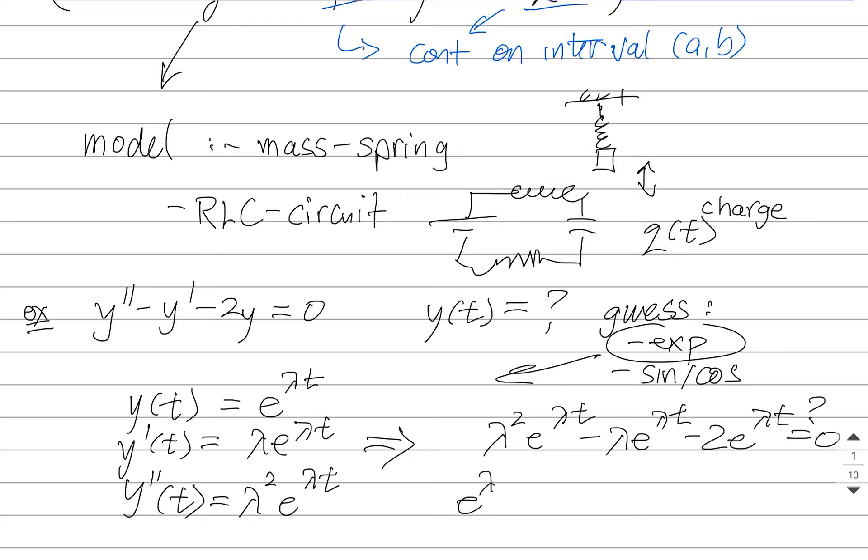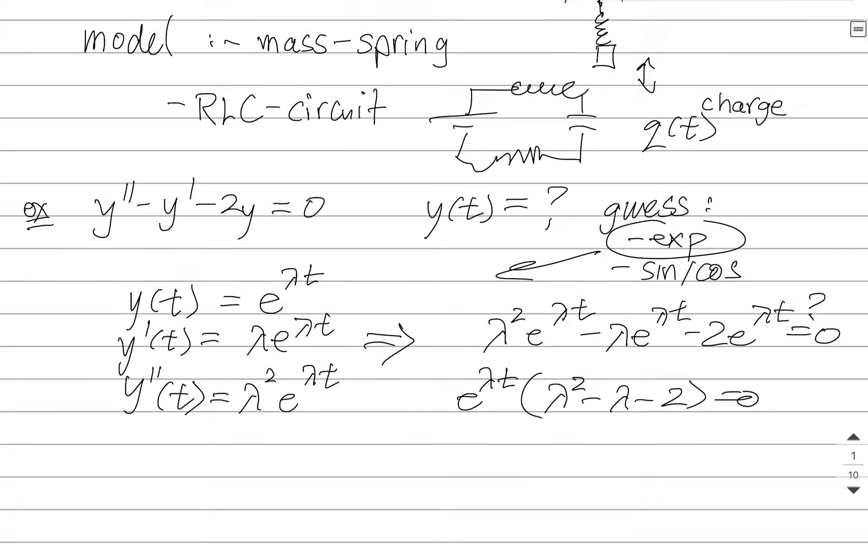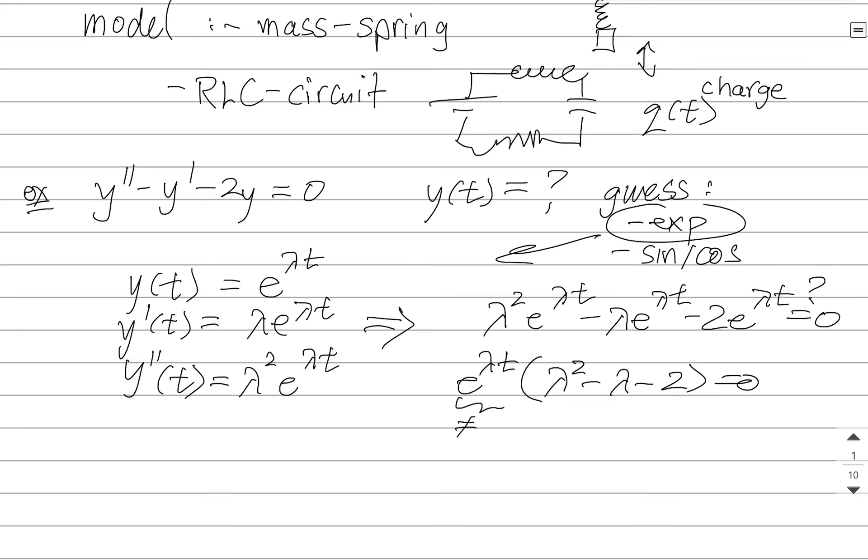Well, there's a common factor of e to the lambda t, so what I'm left with is something like this. Now, I know that this exponential function will never be zero, so that means this choice of function will only be an answer if I can satisfy this equation with the lambda.